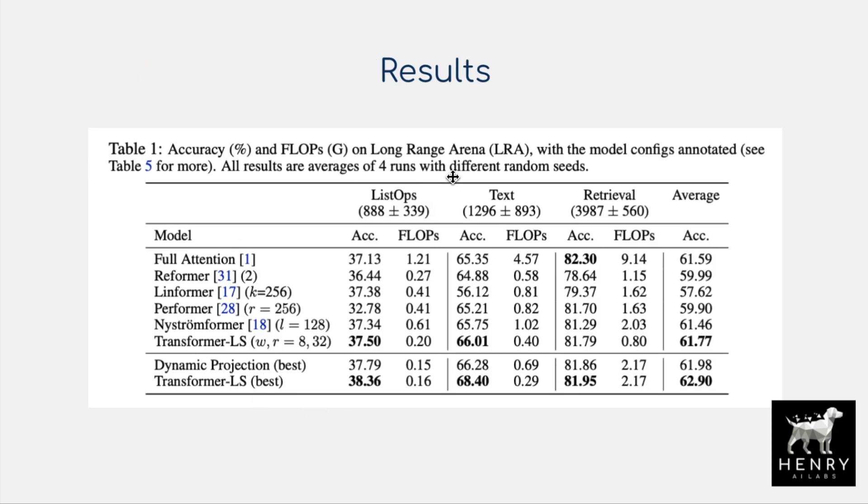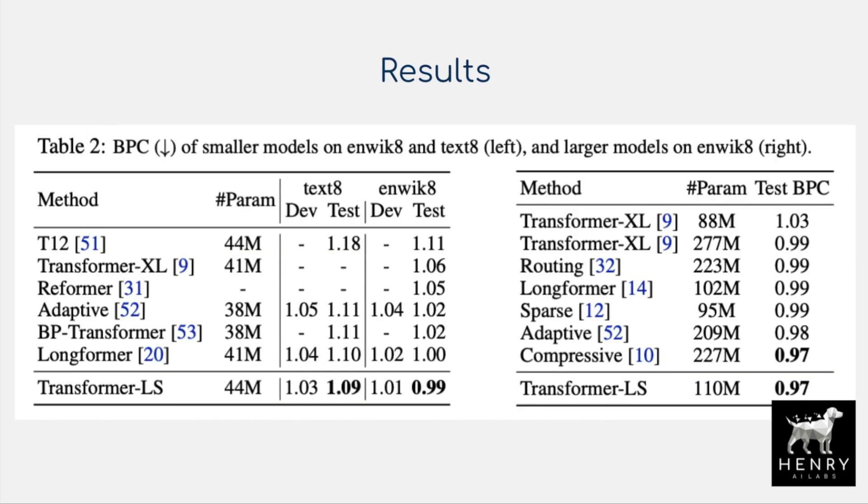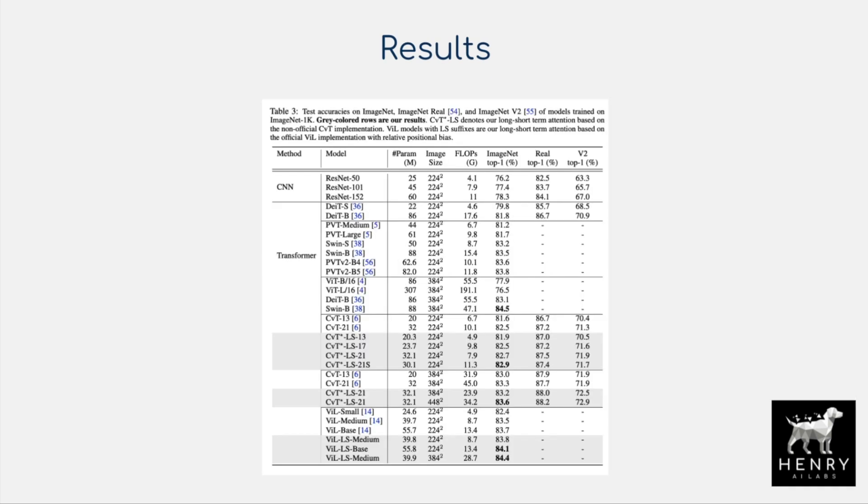We see the result of using the transformer, the long-short transformer, performing better than these other models like Reformer on these long-range arena tasks, as well as language modeling benchmarks on the ENWIKI dataset, and then showing the parameter count with the transformer LS and then the complexity that it achieves, and also the results with image classification. And this is a pretty interesting result, achieving an 84.4% ImageNet accuracy compared to these other designs.